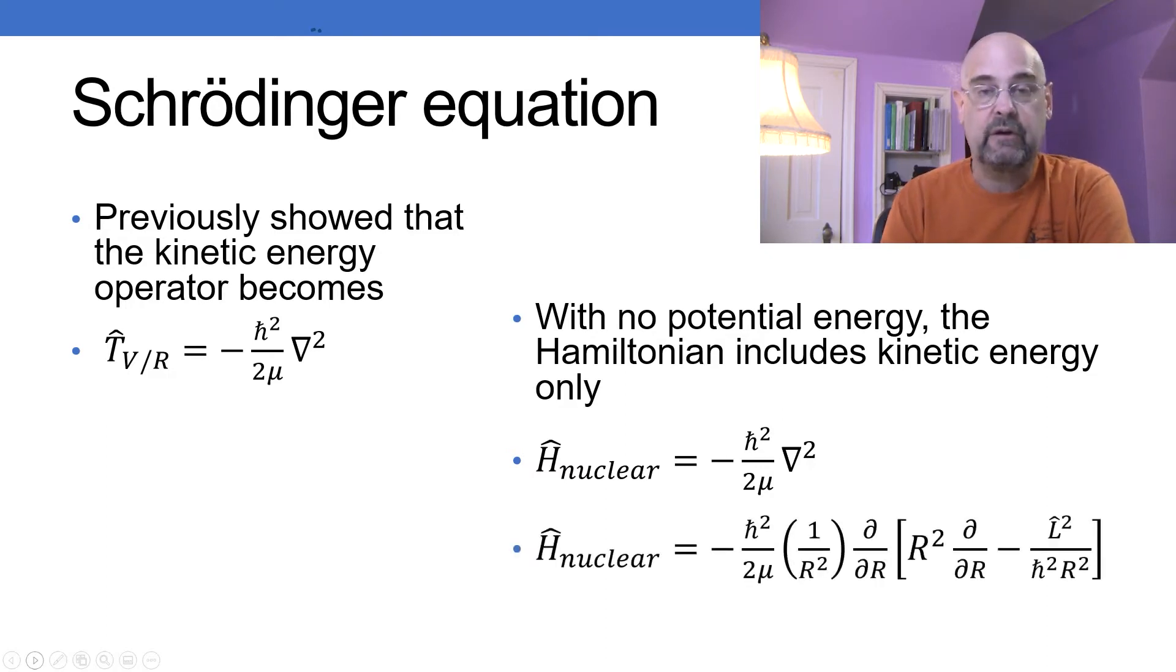In Cartesian coordinates that looks pretty simple, but the problem's insolvable, so we can't use those. Instead we're going to use spherical polar coordinates. In this case we have this fairly complicated expression which includes the angular momentum operator squared and multiple references to the bond length.